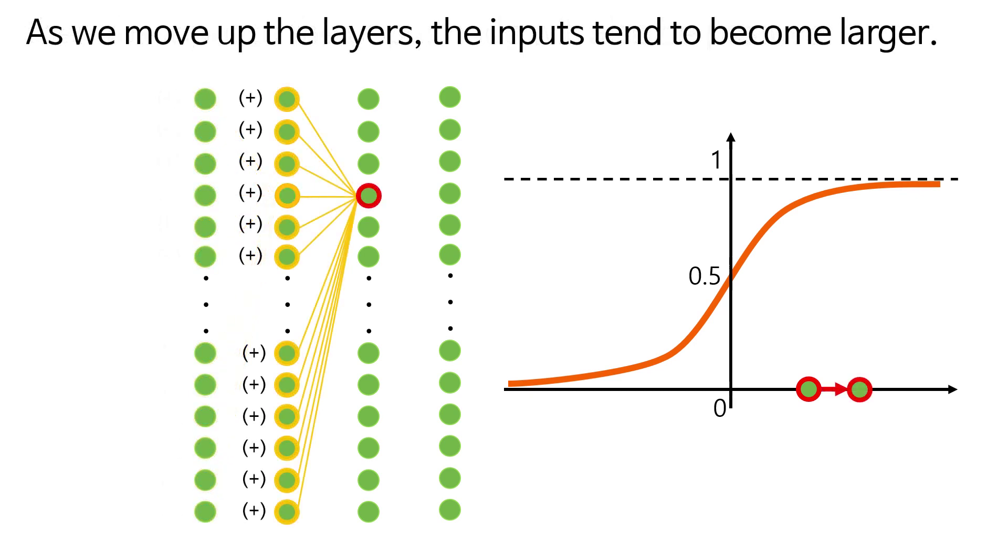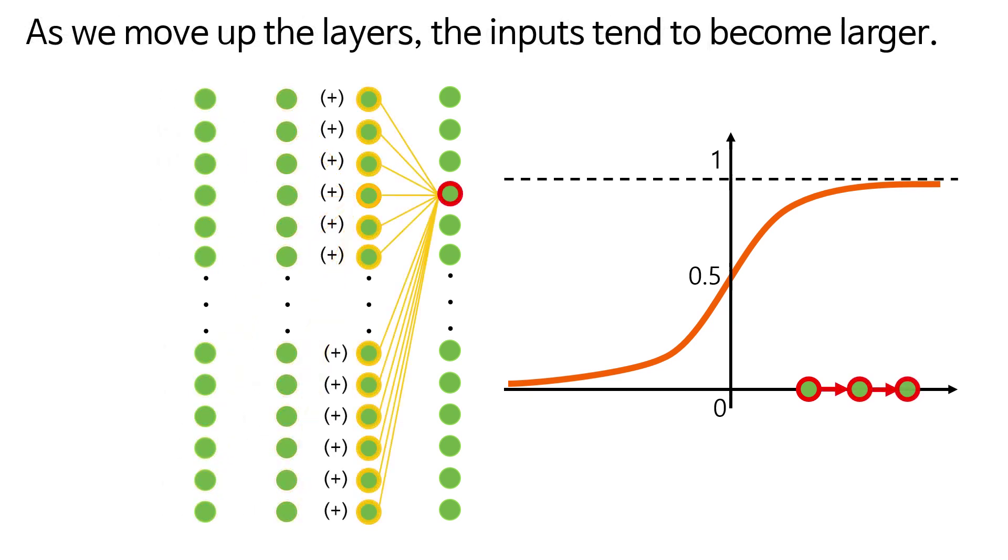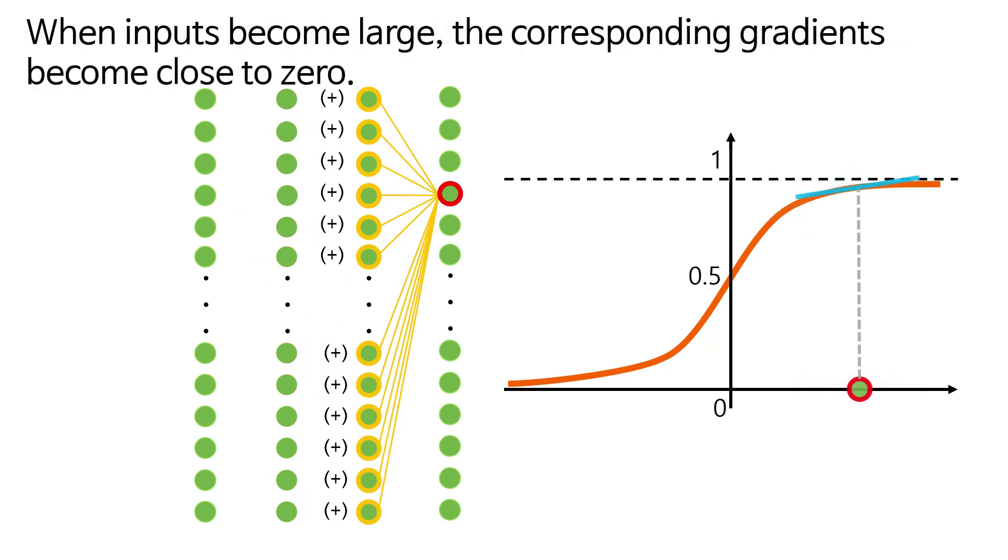As we move up the layers, the inputs tend to become larger. When inputs become large, the corresponding gradients become close to zero.